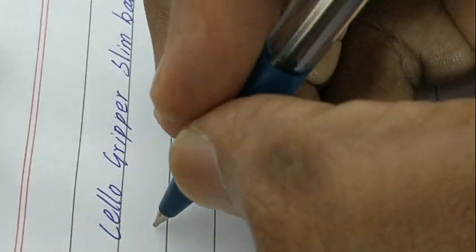Let's check the writing impression with Classmate Notebooks. Cello Gripper, as the name says, gives a nice grip and slim writing impression.